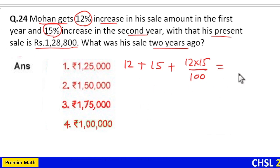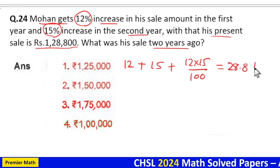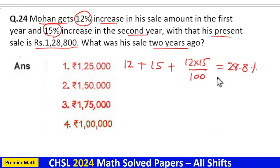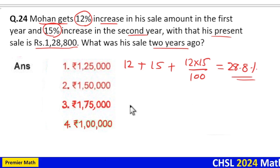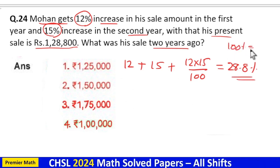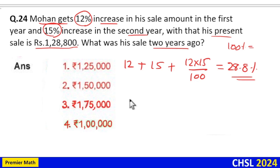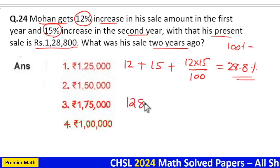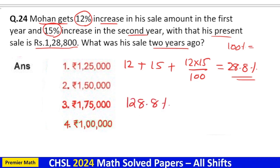So in two years increment is equal to 28.8 percentage. Consider initial amount as 100 percentage, so total increment is equal to 128.8 percentage. Now it is given as 1,28,800.